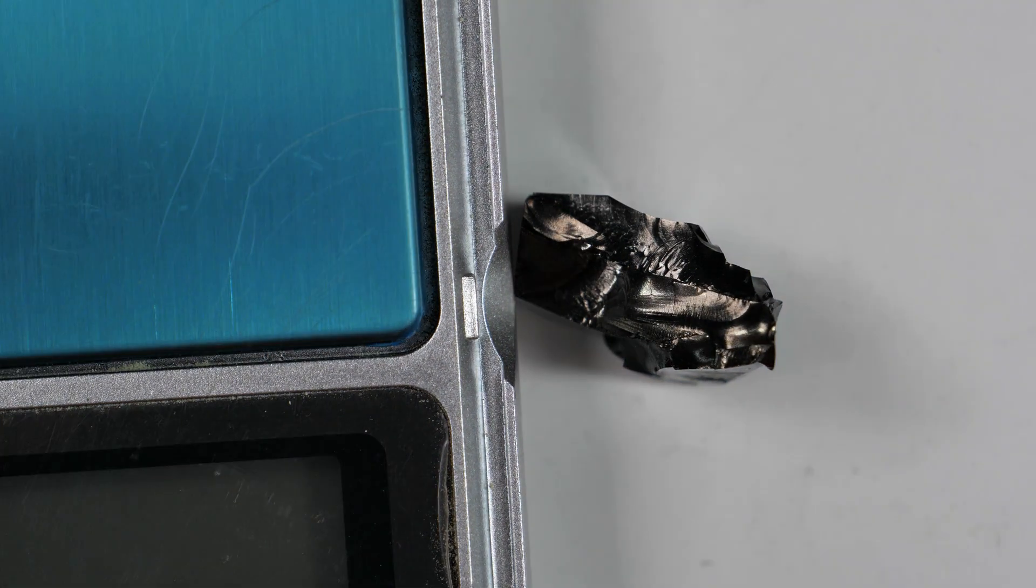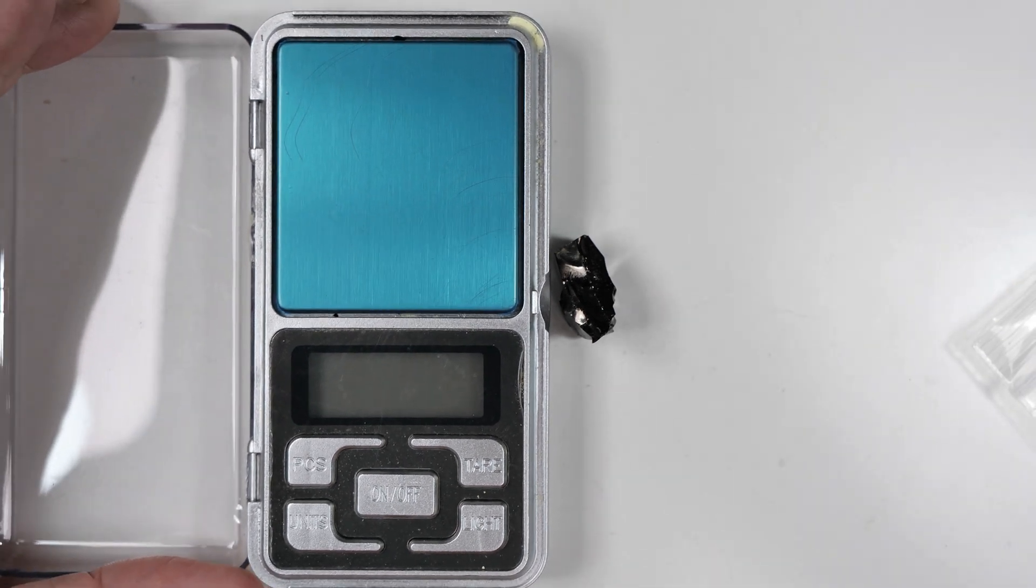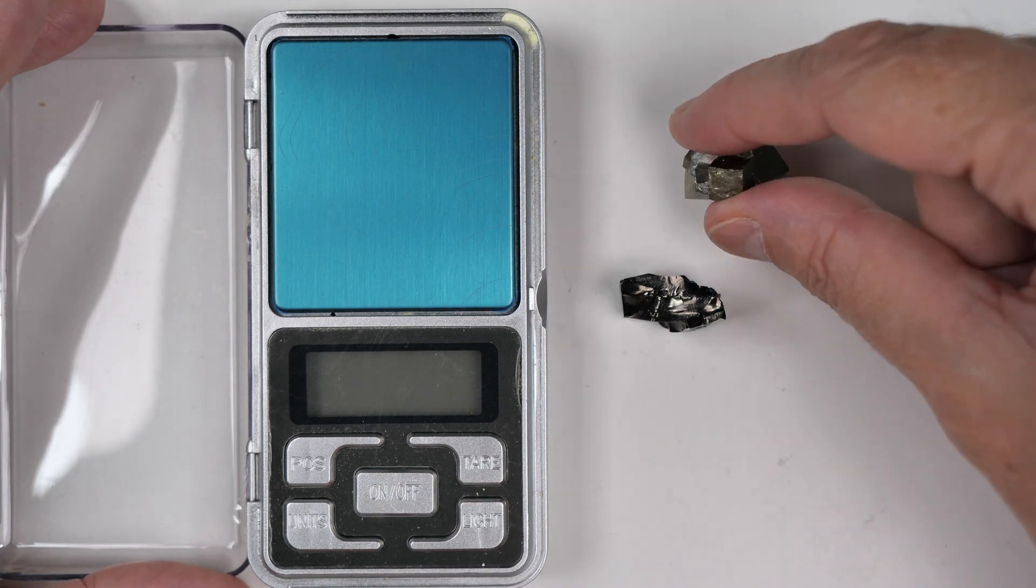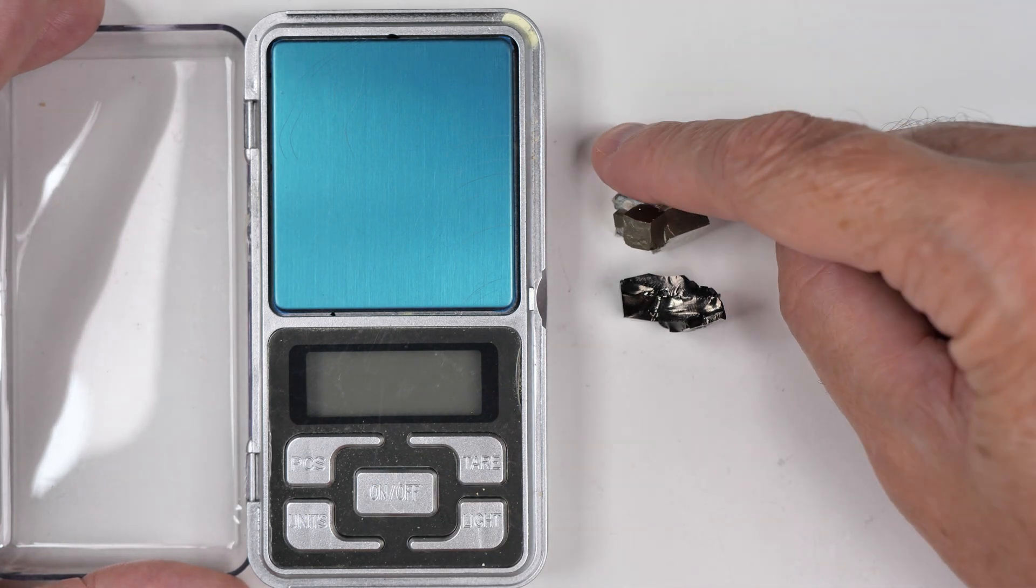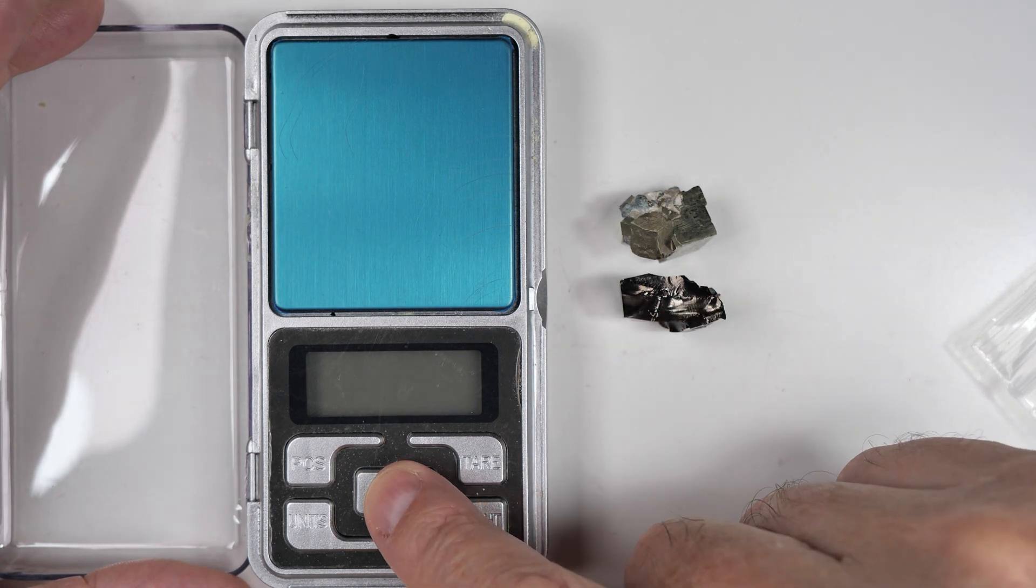We'll put this on the scale and zoom out so you can see that. Okay, there we go. And turn this on. And let's compare this to the piece of iron pyrite, which is roughly the same volume of material. It's a little bit smaller, but close enough.